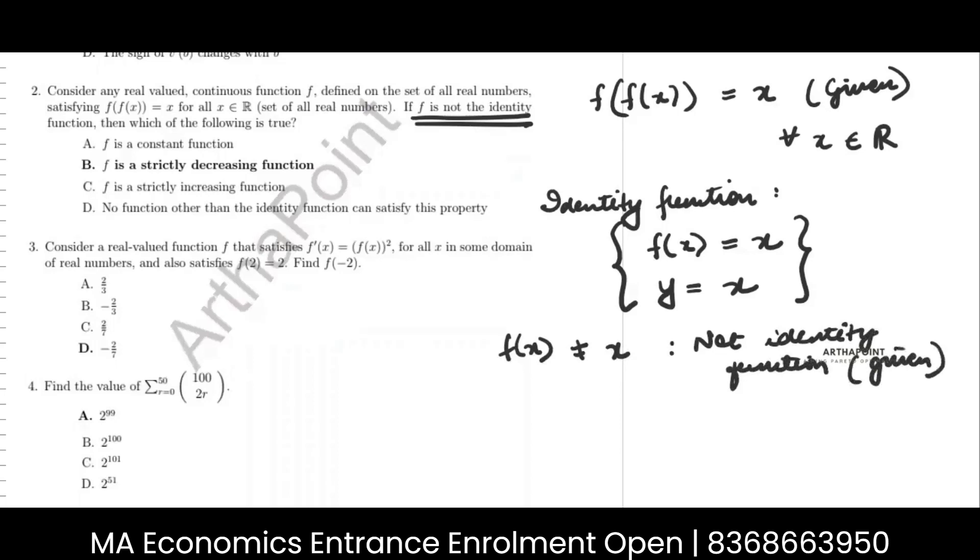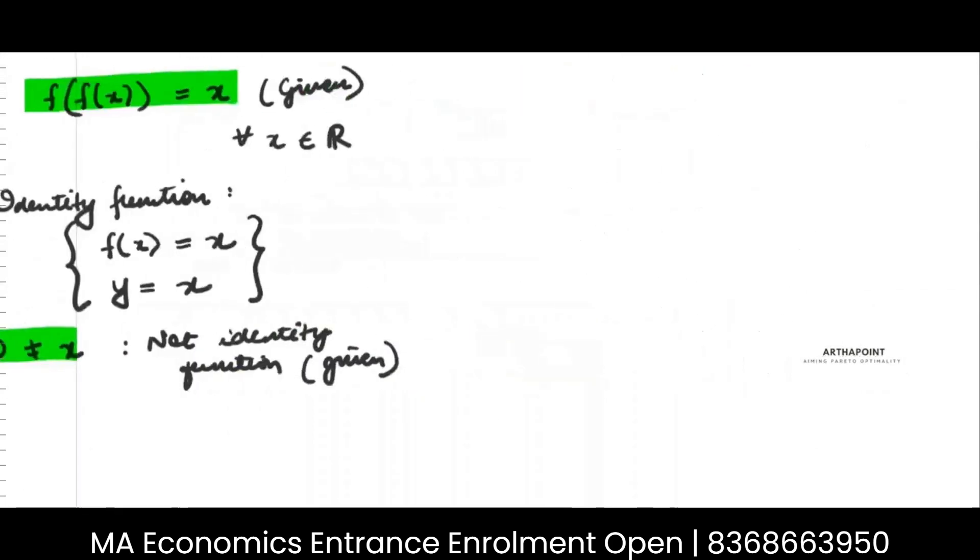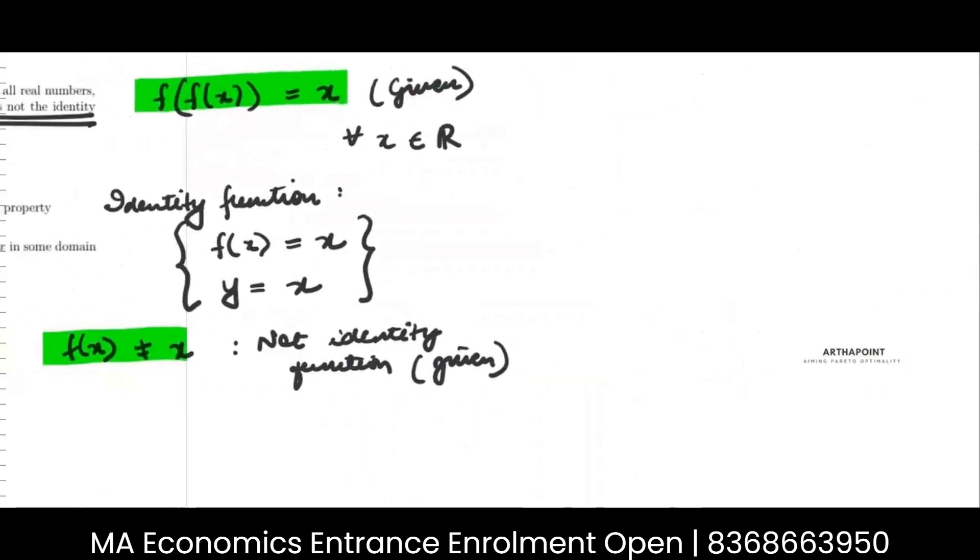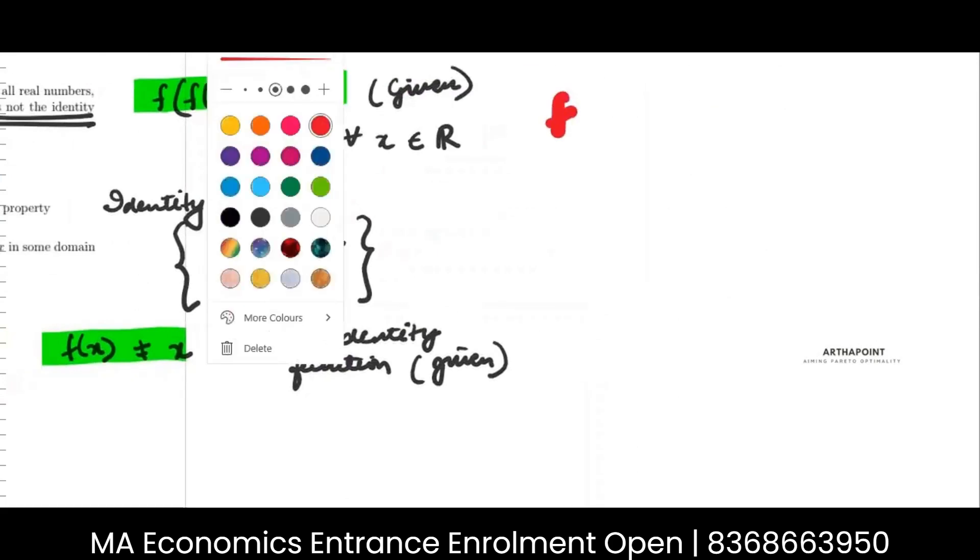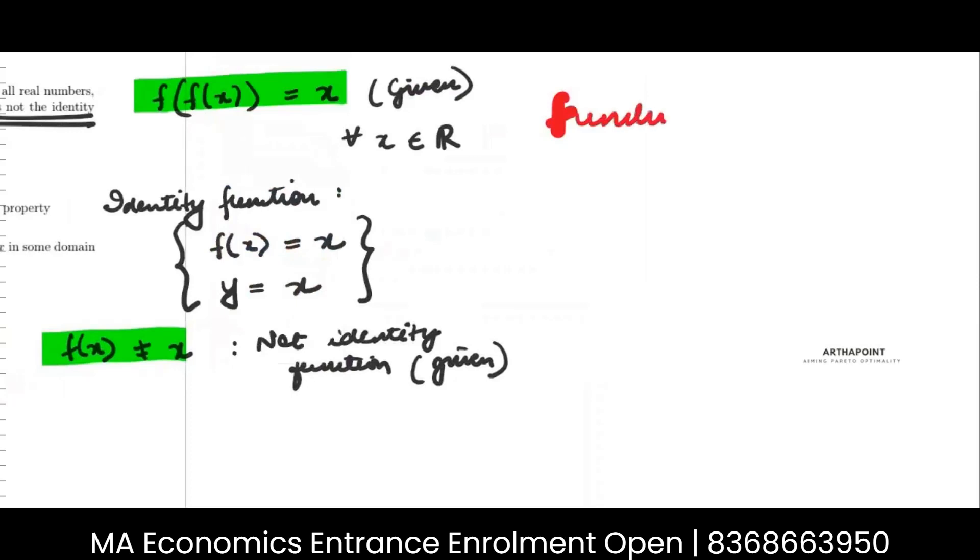Then it says which of the following is true. See, two things are given to us. One, f of f of x is equal to x. Second, f of x is not equal to x. These are given to us. And based on this, it is asking which of the following property is true. Now, to go ahead and do this, you will always try to formulate any function which will satisfy both of these properties.